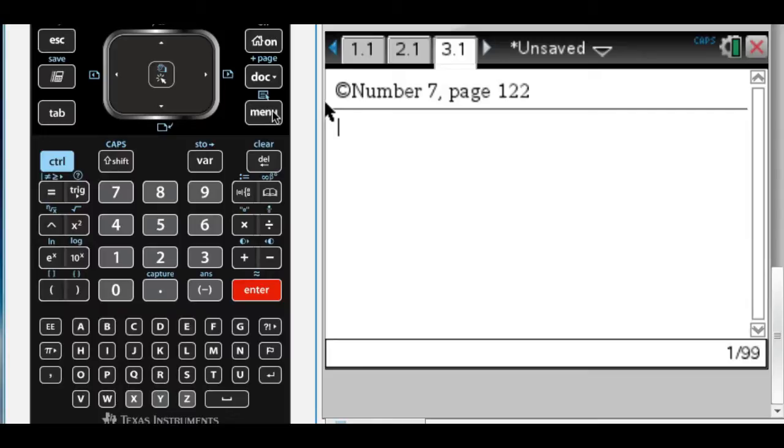So this will be number 7 on page 122. Okay, so this one, there's actually a picture in the book. So we have 84.1 degrees is an angle, and the side opposite that is 12, and I want the side adjacent.